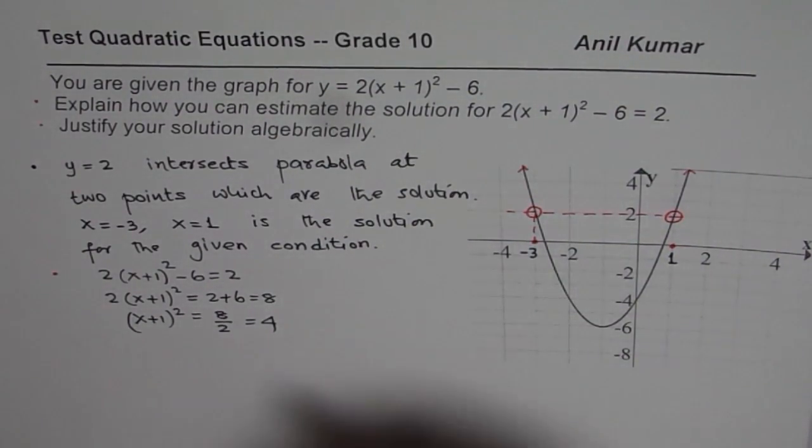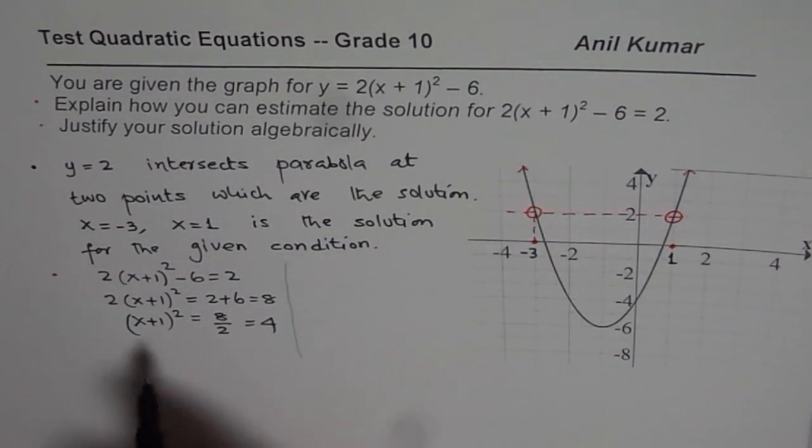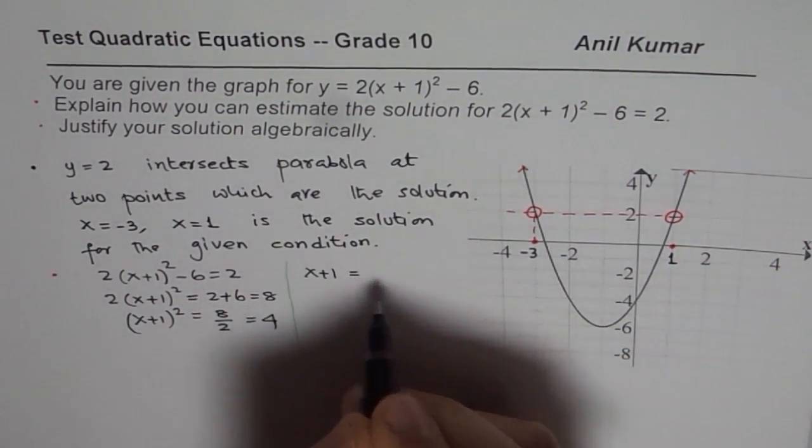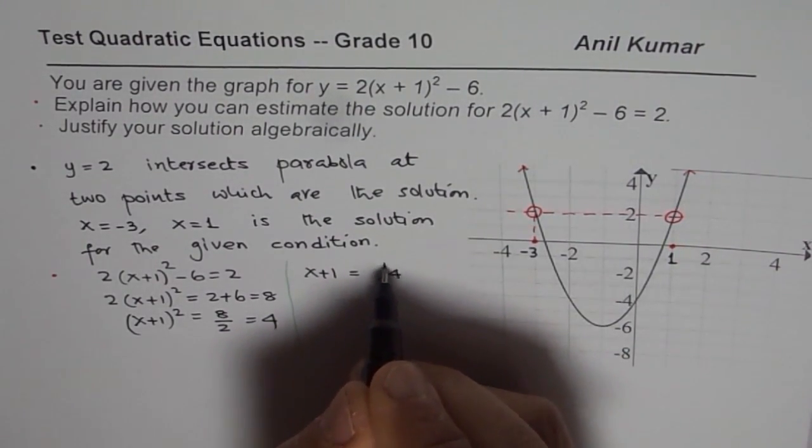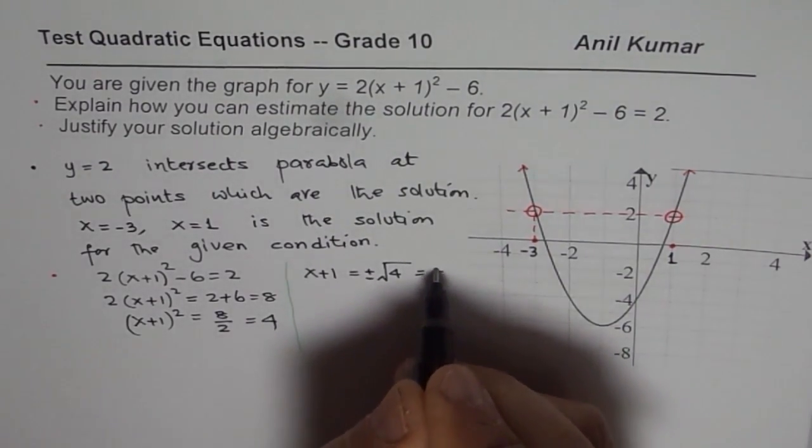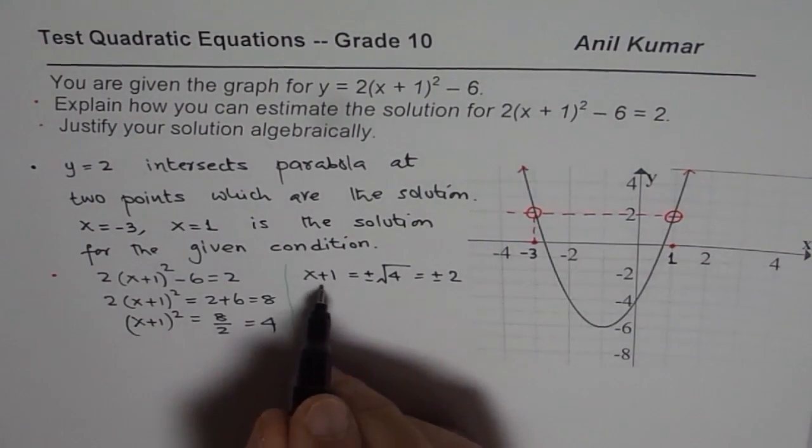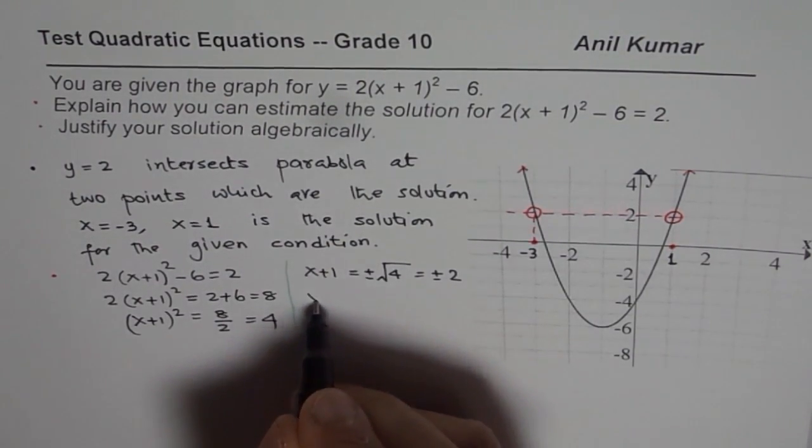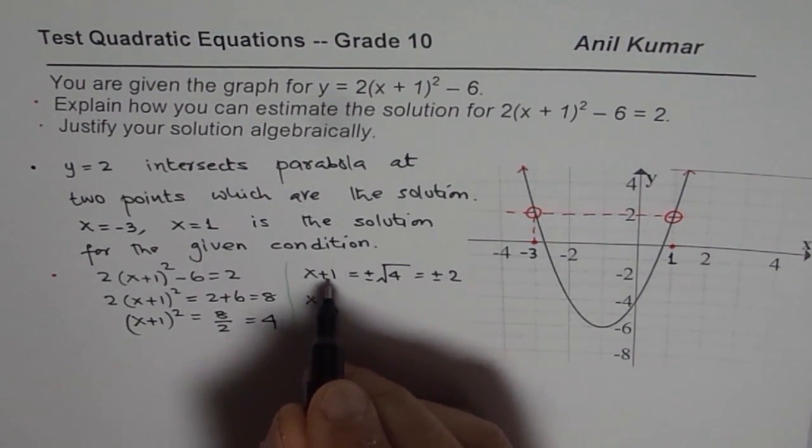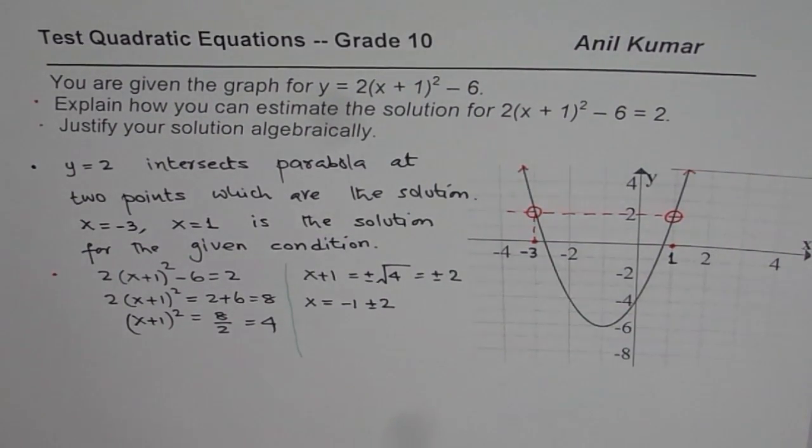Now once you have done all that, you can square root. Now if you square root, you get x + 1 equals to square root of 4. Whenever you square root, you have to write plus and minus. So that gives you two values plus and minus 2. x + 1 equals to ± 2, that means x equals to -1 ± 2. So those are the two solutions.